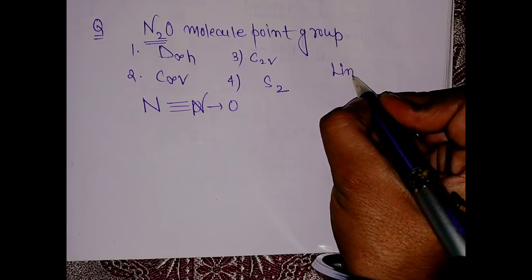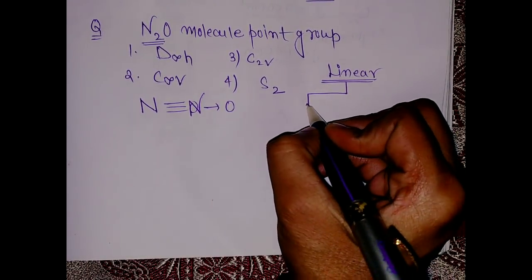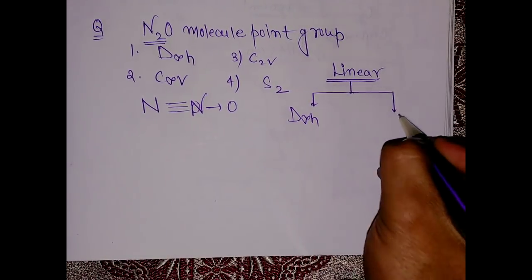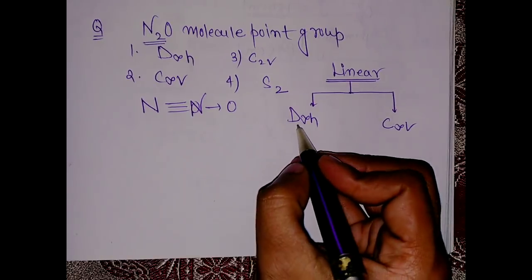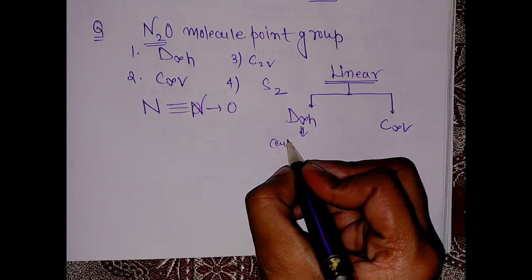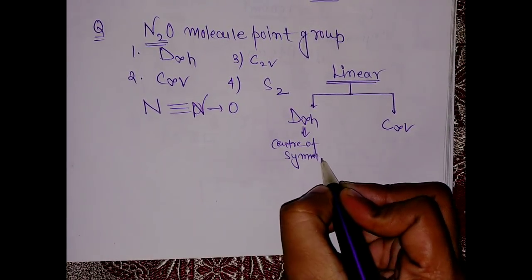First of all, these are linear molecules. So for linear molecules in group theory, we have two types of point groups: which is your D∞h and one is your C∞v.